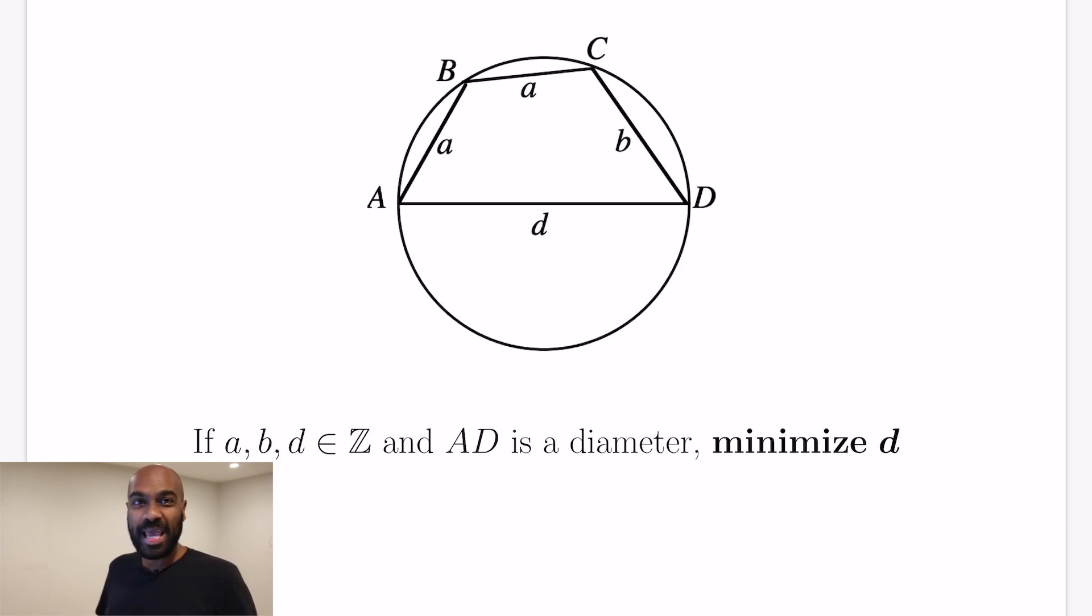If we knew that A, B, and D were forced to be integer valued, what's the smallest possible value D could take on? That's the problem we're going to look at today, which dives into looking at cyclic quadrilaterals and a little bit of number theory.